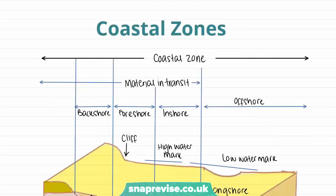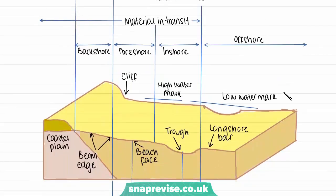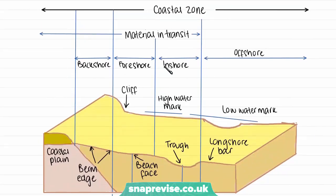Now we're going to look at coastal zones. This is important for understanding the rest of the topic, as many of these zones will be referred to, so it's good to know what they mean. The entire coastal zone consists of the back shore, the foreshore, the inshore, and the offshore.